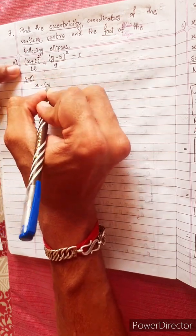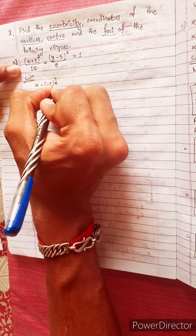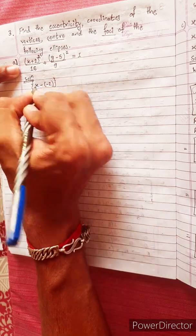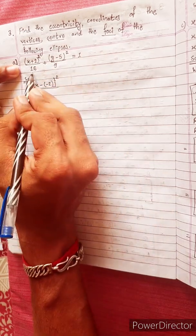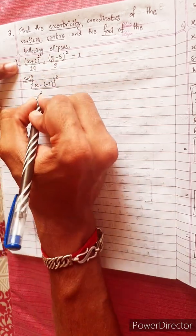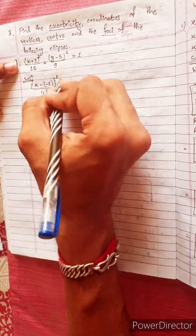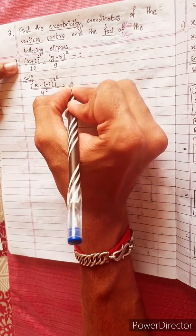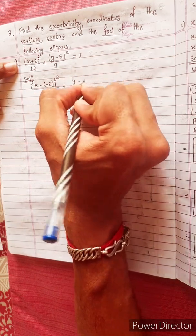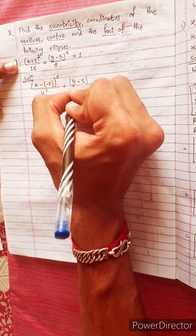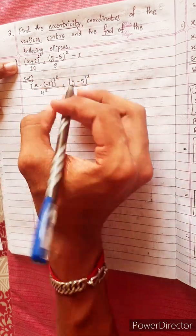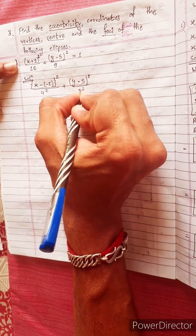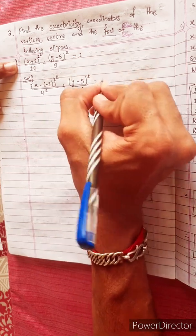x minus 2, divide by 16 — that is 4 squared — plus y minus 5 squared, divide by 9 — that is 3 squared — equals to 1.